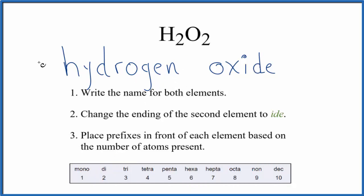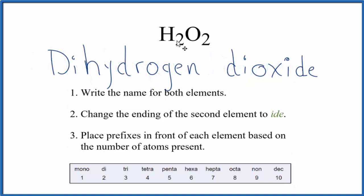So for hydrogen, we have that 2, we write dihydrogen. And then for the oxygen, which is now oxide, we write dioxide. That makes the name for H2O2 dihydrogen dioxide.